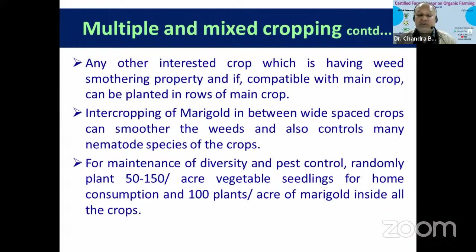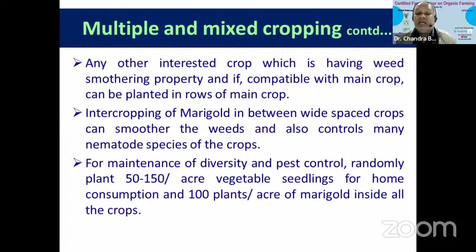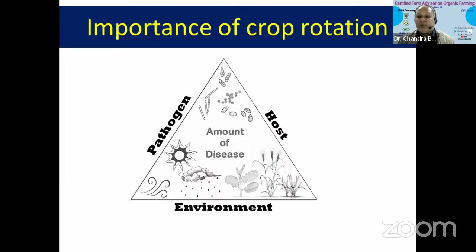Intercropping of marigold is very important as it acts as an enemy crop for several kinds of nematodes, as was discussed by Dr. Kamal Khiladi. At least in case of kitchen gardens or nursery areas where vegetable crop nurseries are raised, having some marigold plants here and there suppresses nematodes. Since nematodes spread from nursery to main field, the nursery should be entirely free from nematodes and other soil-borne plant pathogens.